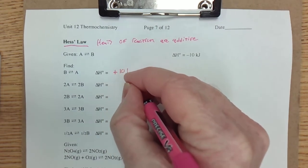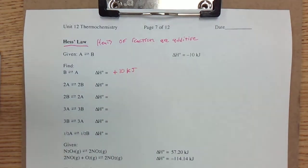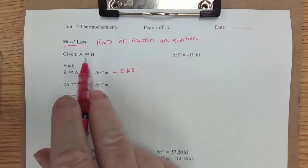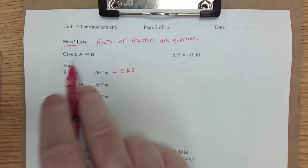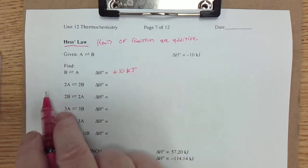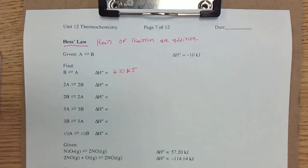Well, 10 kilojoules is absorbed. So when you reverse a reaction, you change the sign on the enthalpy. If going forward it's exothermic, going backwards it has to be endothermic.